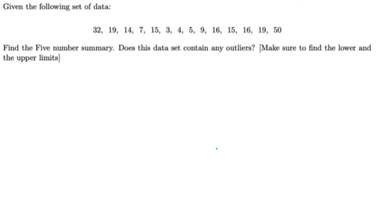Given the following set of data: 32, 19, 14, 7, 15, 3, 4, 5, 9, 16, 15, 16, 19, 50. Find the 5-number summary. Does this data set contain any outliers? We have two parts to this problem. First is 5-number summary. What is the 5-number summary? It is minimum, Q1, Q2 or median M, Q3, and maximum. Let me explain how to find the median. What is the first step? Arrange our data set from smallest to largest.